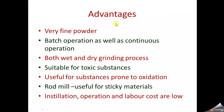The advantages offered by ball mill include: a very fine powder can be obtained; both batch and continuous operations can be performed; both wet and dry grinding processes can be achieved; it is suitable for toxic substances; and it is useful for substances prone to oxidation. Rod mill, using small cylindrical rods instead of balls, is useful for sticky materials. Installation, operation, and labor costs are comparatively low.